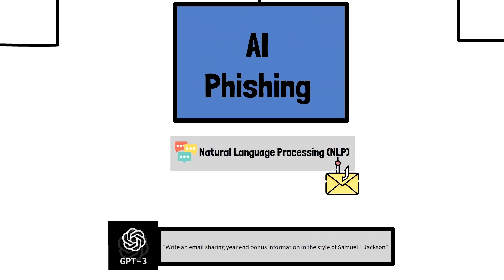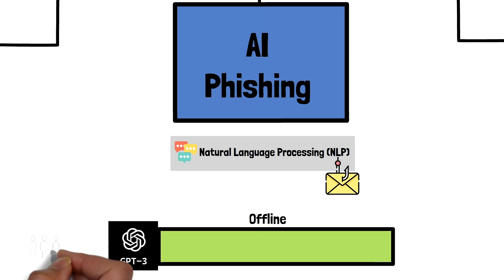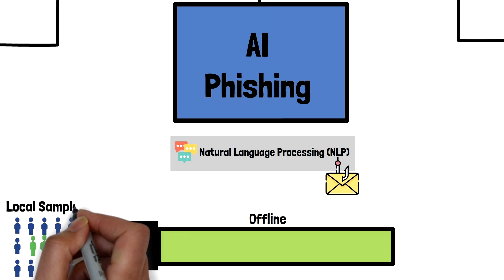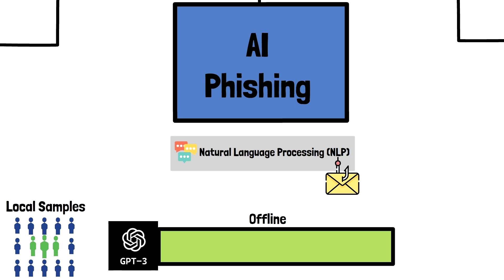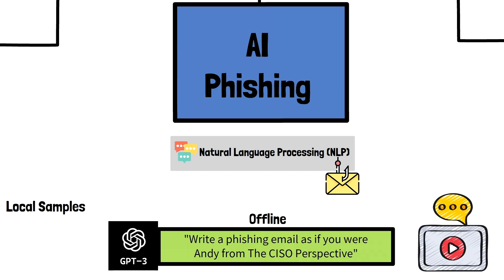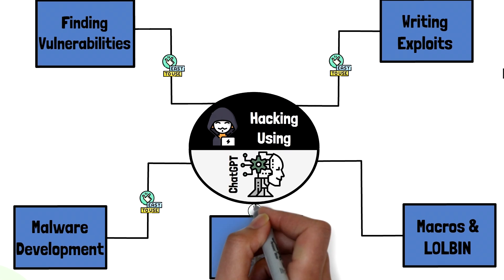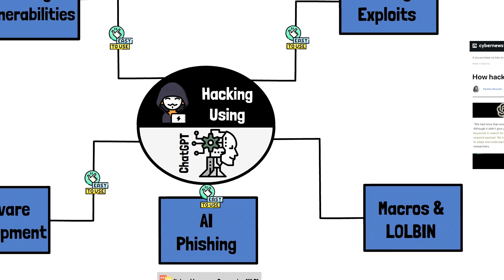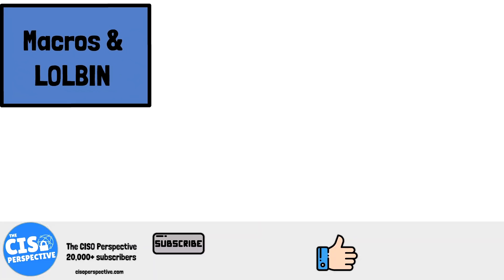This is just the beginning. ChatGPT is based off of the GPT-3 learning model, which can be trained offline using local data to write in the style of real people, provided that there are enough samples of their emails. This means that with enough sample size, GPT-3 can be trained to write emails in the same tone and format of the victim in question. With our phishing email in place, we can then attach a file like a spreadsheet with macros.